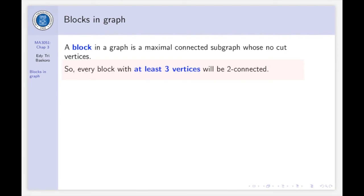And so, every block with at least three vertices will be two connected, not only connected, but two connected. So that means by removing one vertex, the subgraph is still connected. Every graph now can be considered as a union of blocks, of edge blocks.